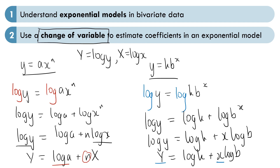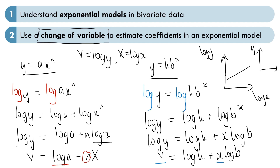What the change of variables allows us to do is to take data that doesn't fit a linear model but shows a clear exponential pattern, and by taking logs of both sides we can see a straight line. For example, if we plot log y on the y-axis and log x on the x-axis for y equals ax to the power of n, we get a straight line, whereas plotting y against x directly would give us a curve.